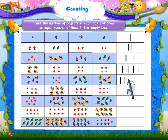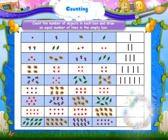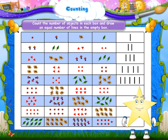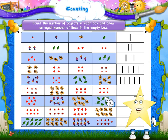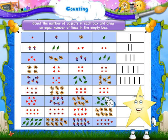Six stars. Six flowers. Six triangles. Six dots. So draw six lines in the box.